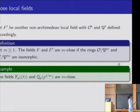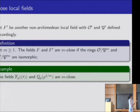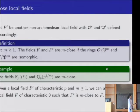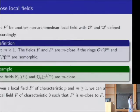Q_p(p^{1/m}) is a totally ramified extension of Q_p of degree m, and that is all we need to ensure the isomorphism works between the rings of integers of these two fields. This can be done in general: given a local field of characteristic p and M, we can always find a field of characteristic 0 that is m-close to F. So we can approximate fields of characteristic p with local fields of characteristic 0.